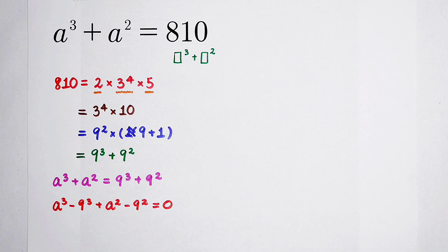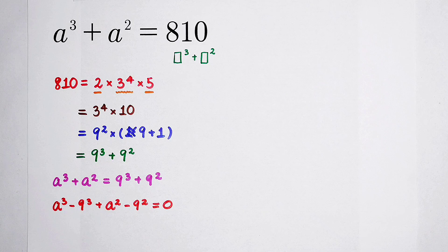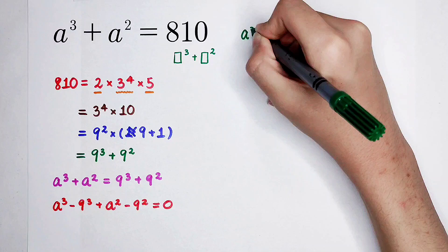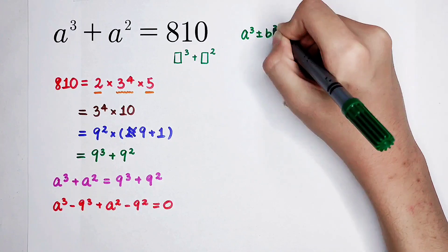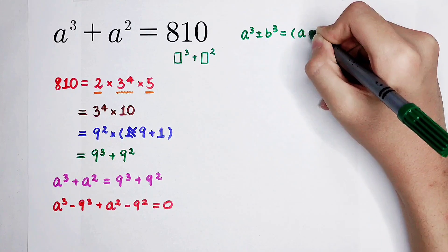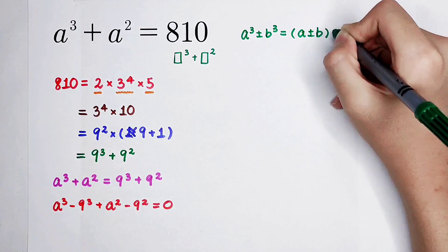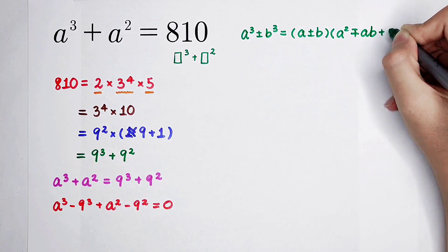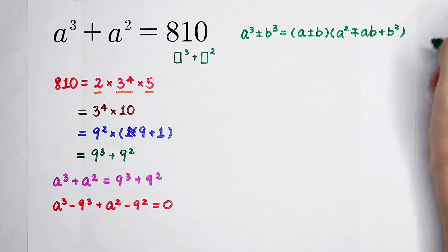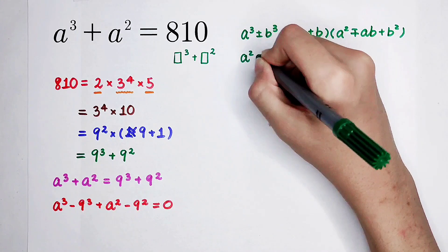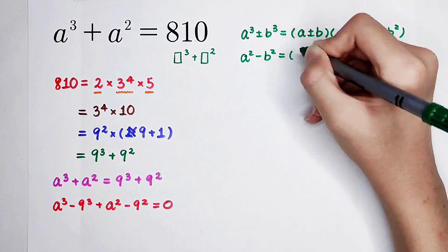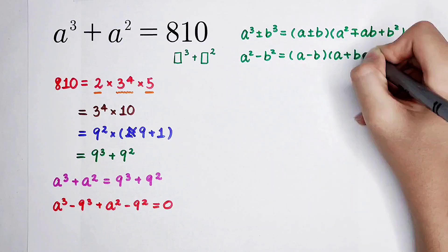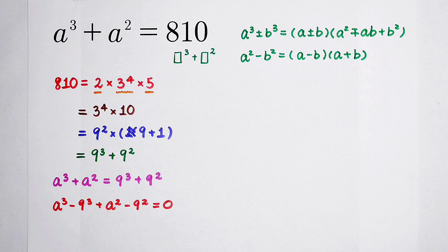Now I'm going to use two formulas. One is a cube plus or minus b cube equals a plus or minus b, times a squared minus or plus ab plus b squared. A squared minus b squared equals a minus b times a plus b.